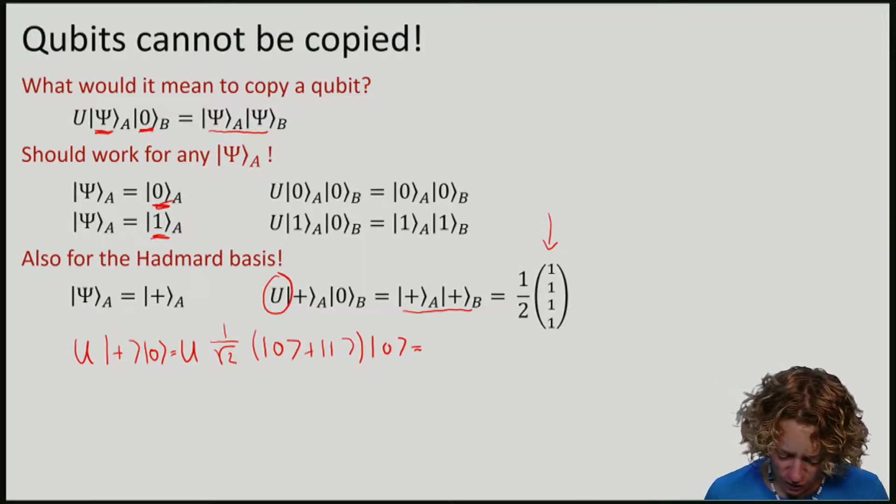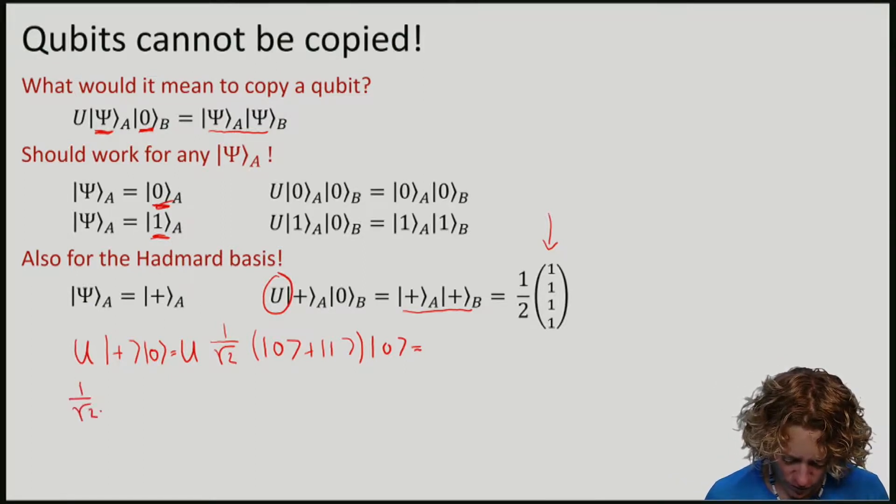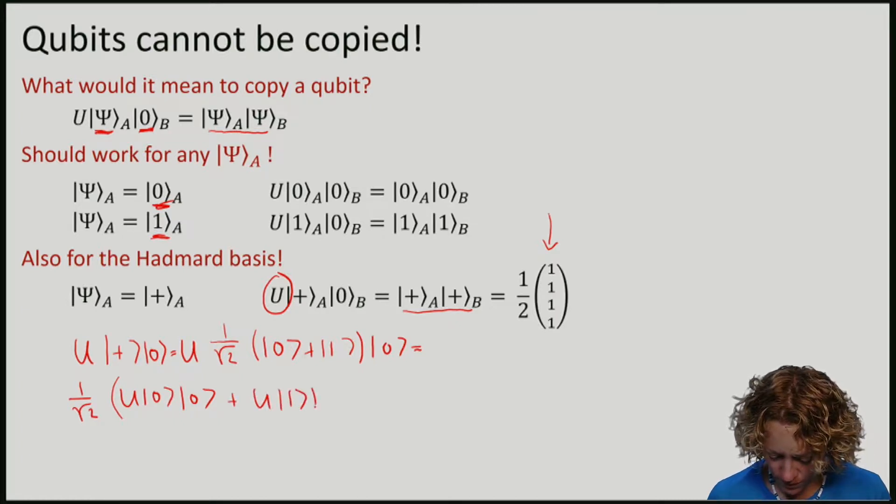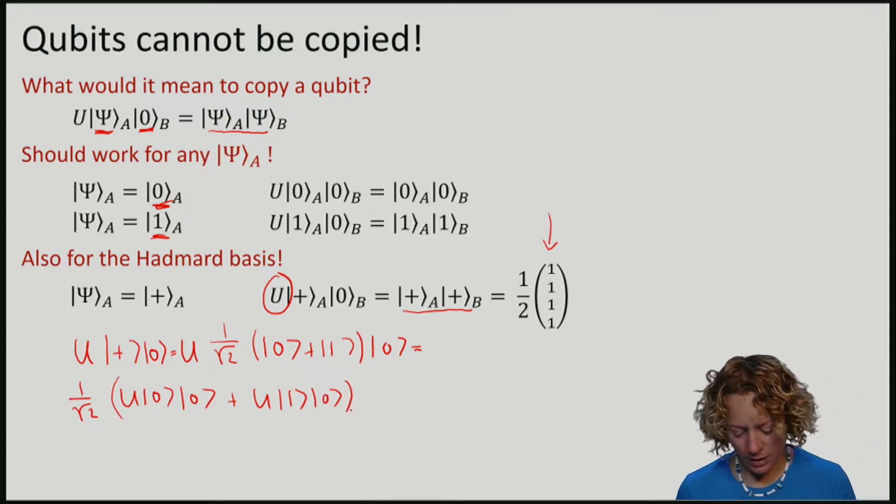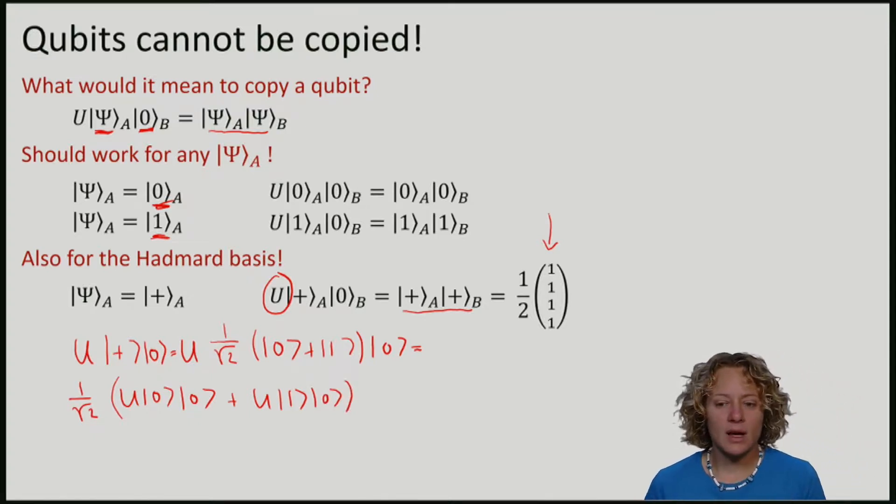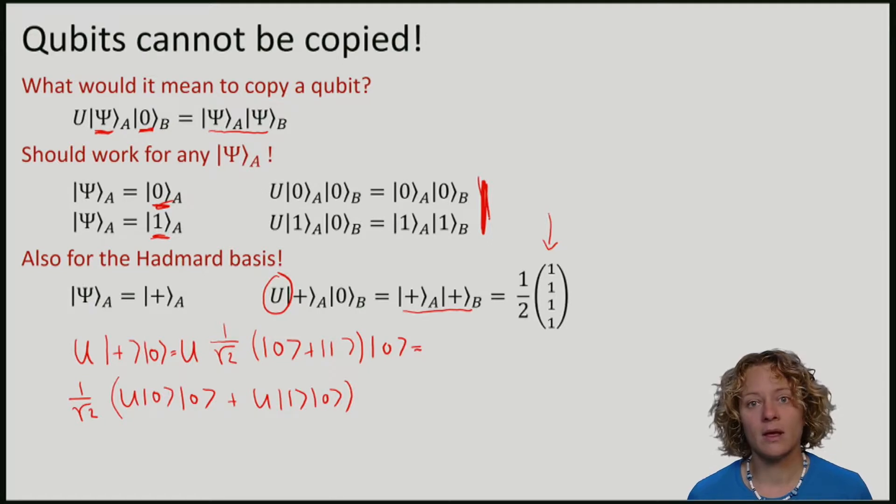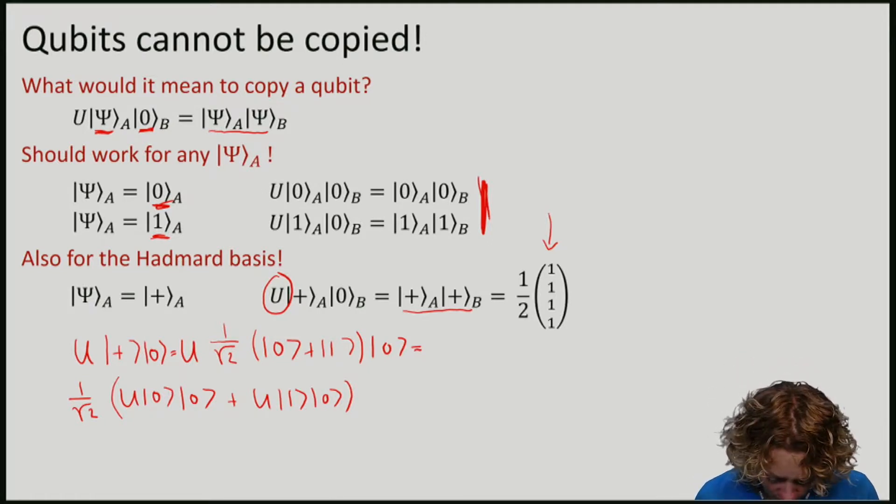If we distribute U, what we have is 1/√2 times U applied to |0⟩|0⟩ plus U applied to |1⟩|0⟩. And because our U should copy any state, in particular the elements of the standard basis, U should have the following effect.